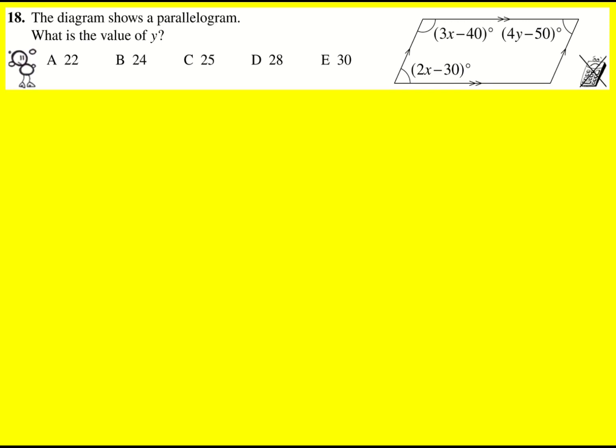So, two angle facts for parallelograms. First one is that opposite angles are equal. Those two will be the same and these two will be the same. We're not interested in that second one, but this is going to be useful.